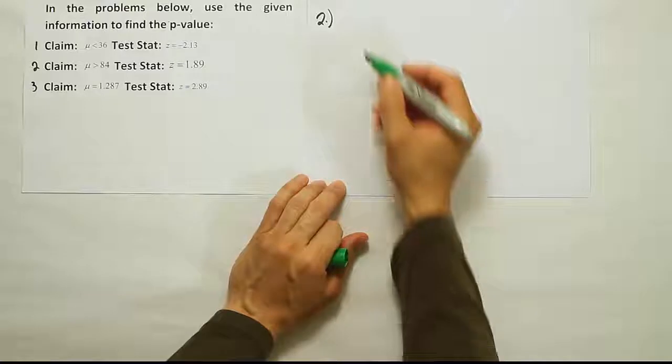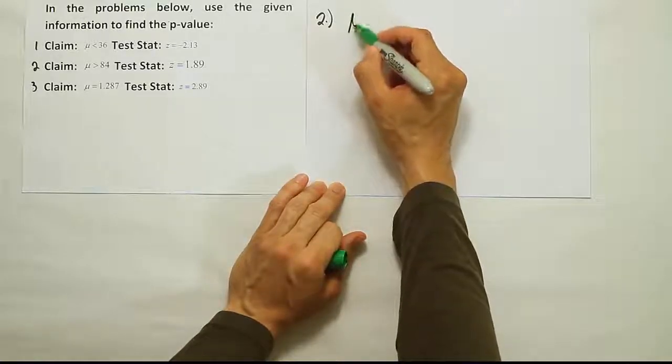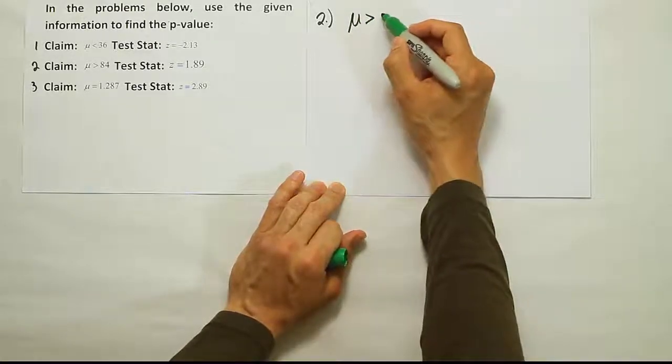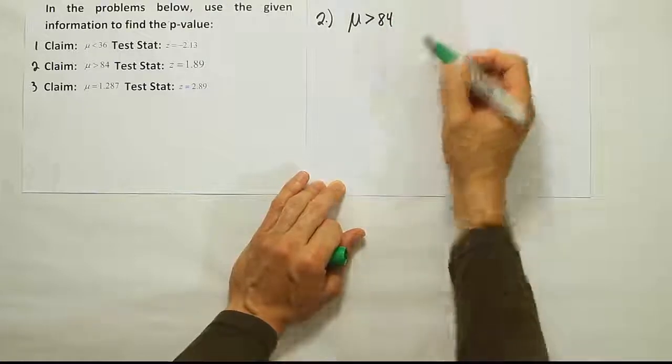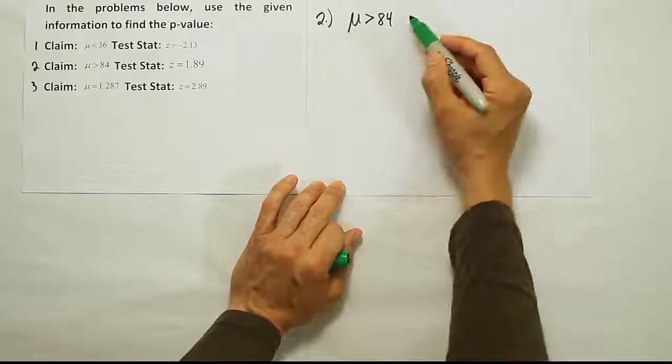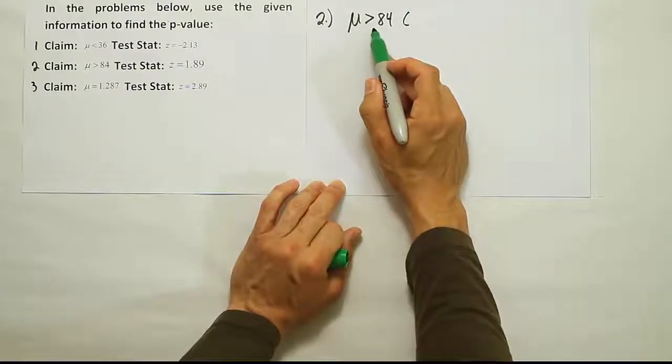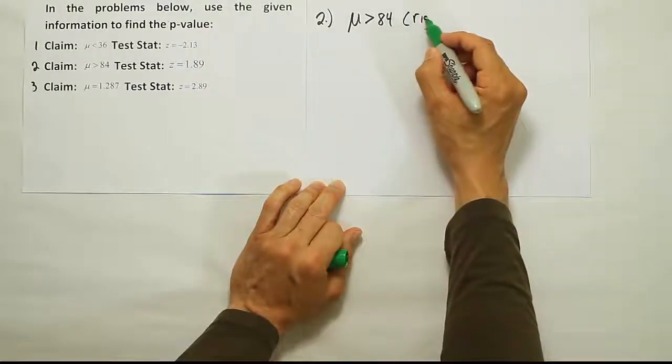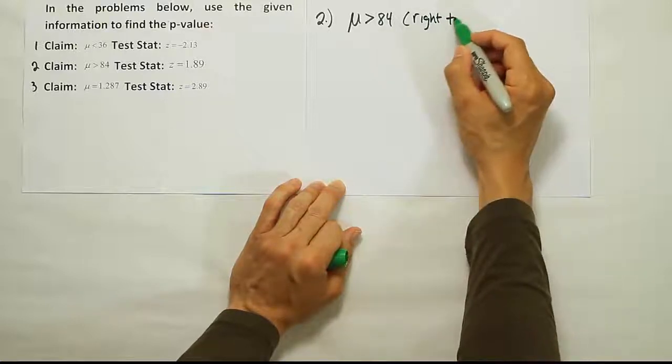First thing we want to do is to look at the claim and figure out whether that indicates that we're dealing with a right-tailed test, a left-tailed test, or a two-tailed test. Well, the claim here is HA because it has the symbol greater than, and the other thing that tells us is that if HA has a symbol greater than, it means that we're dealing with a right-tailed test.